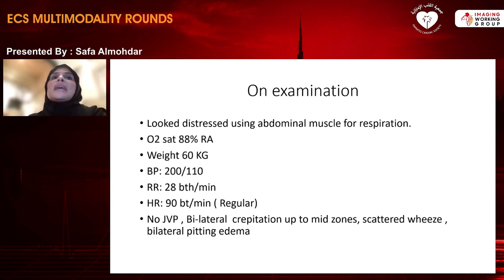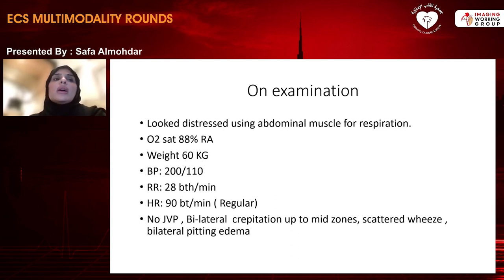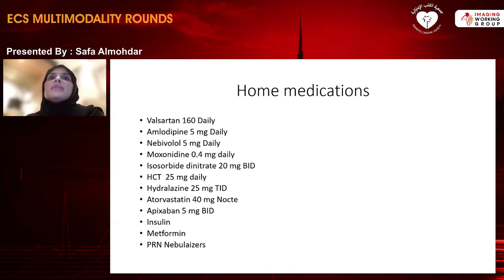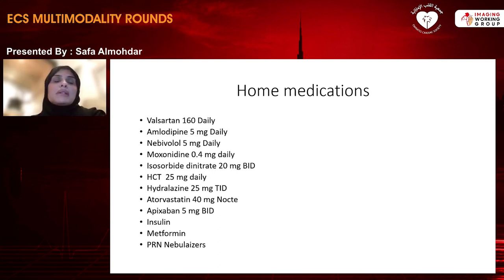On clinical examination, the patient looked distressed and was using accessory muscles for respiration. Oxygen saturation was reduced at 88% on room air. She weighed 60 kg with blood pressure elevated at 200/110, tachypneic at 28 breaths per minute, heart rate 90 beats per minute and regular. There was no JVP but she had bilateral crepitations up to the mid-zones, scattered wheeze, and bilateral pitting edema. She was on extensive medications including valsartan, amlodipine, beta blocker, moxonidine, isosorbide dinitrate, hydrochlorothiazide, hydralazine, atorvastatin, apixaban, insulin, and metformin.